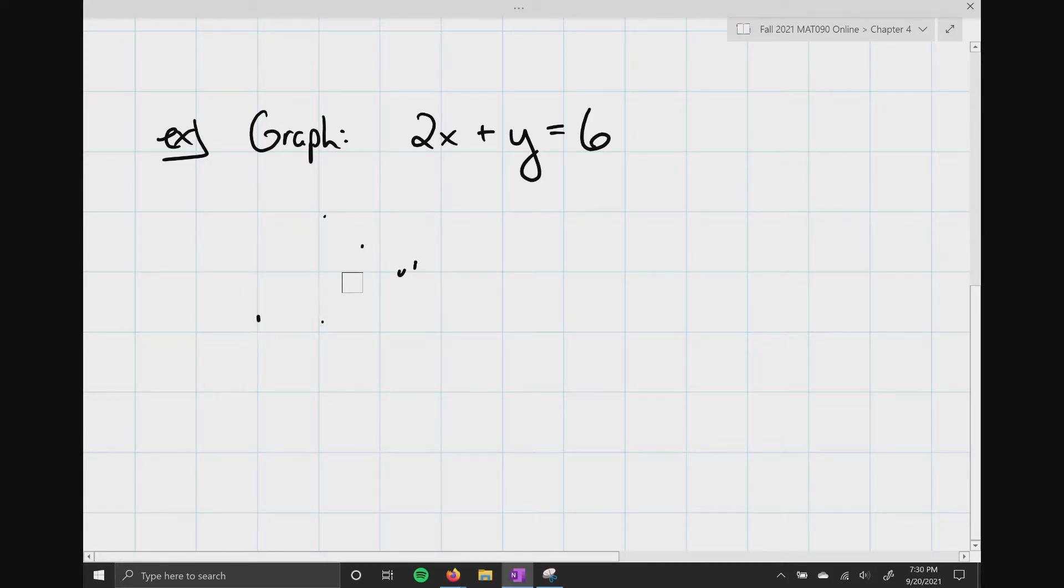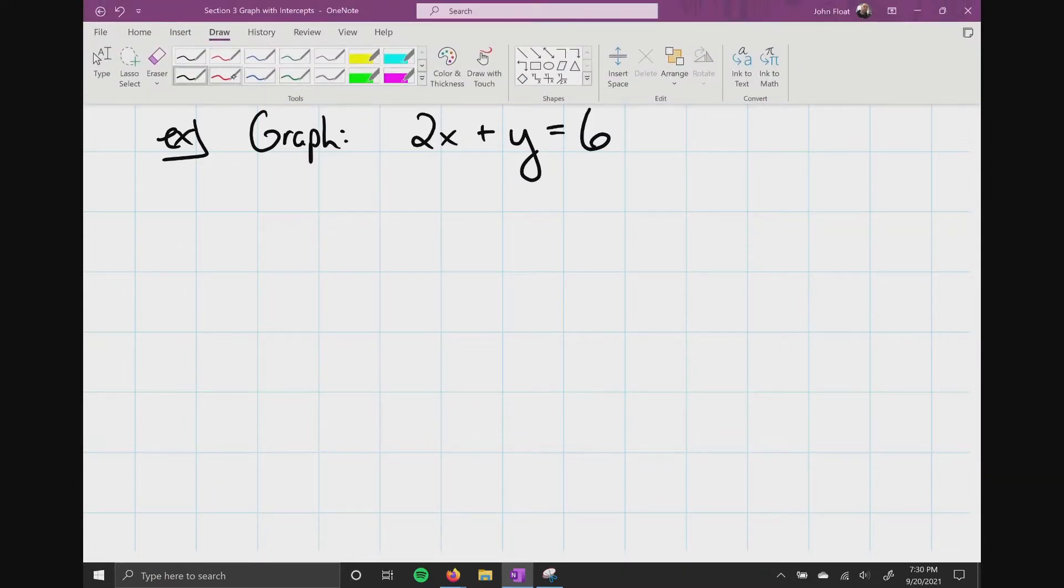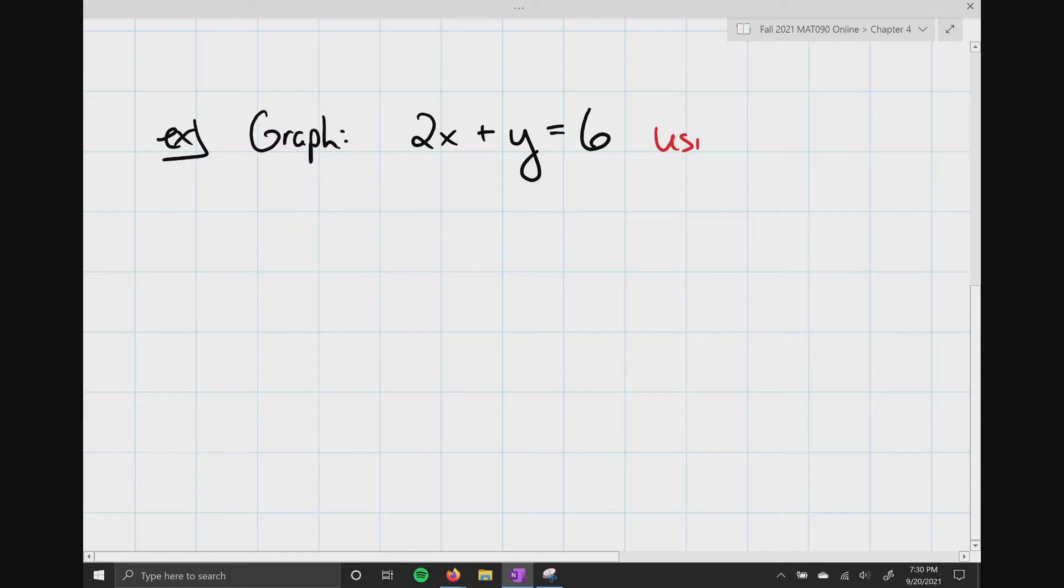What we're going to do is we're going to graph this. And how are we going to find our points? Well, what we're going to use are the intercepts to do this. Now, this equation right here, linear equation, 2x plus y equals 6, is in a very special form.